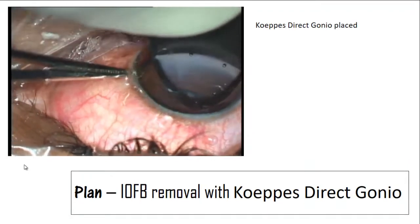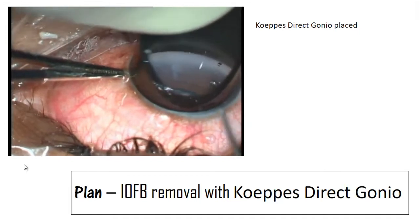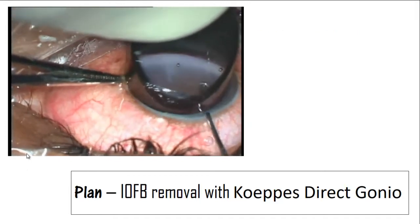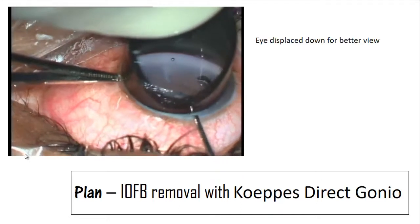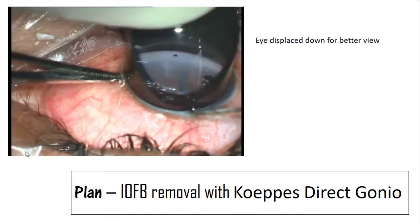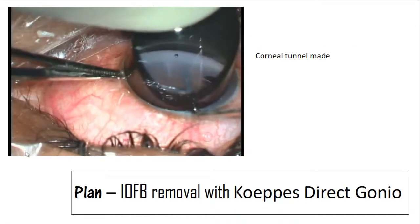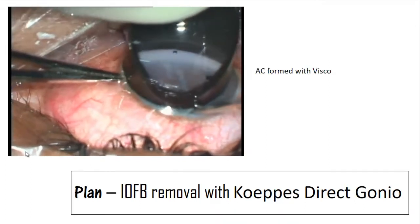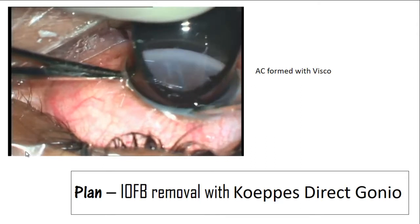A Koeppe direct gonio lens was placed and the foreign body was visualized. The eye was displaced down for a better view. A corneal tunnel was made and the anterior chamber was formed with viscoelastic.